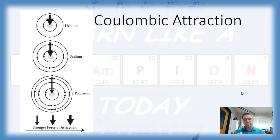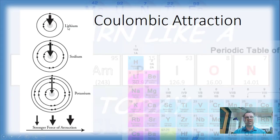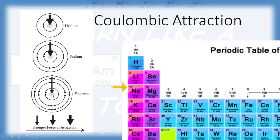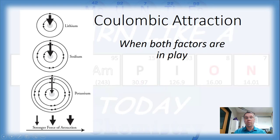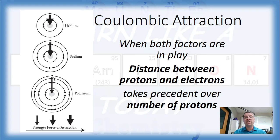What if the two factors — distance and number of protons — seem to contradict each other? Going back to the first periodic table example: lithium had 3 protons, sodium had 11, potassium had 19. One might say potassium has the most protons and should have the strongest Coulombic attractive force, but that's not the case. Lithium has two electron levels, sodium has three, and potassium has four — so potassium's electrons are a further distance away. When both factors are in play, distance between the protons and electrons takes precedence over the number of protons.